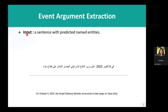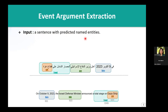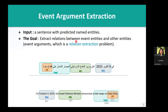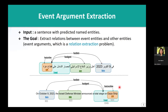In our research, we focus on predicting the relationships between specific events and their arguments in unstructured text. Given an input sentence with predicted named entities, our goal is to extract the relations between events and other entities within the same sentence. Specifically, we aim to identify the has-location, has-date, and has-agent relationships in sentences describing events.